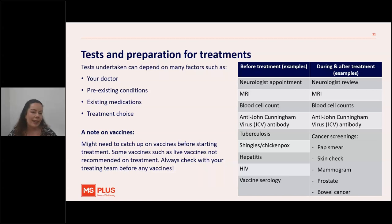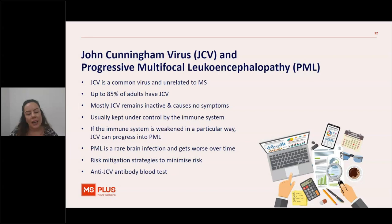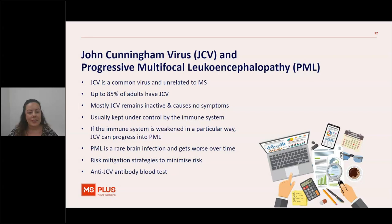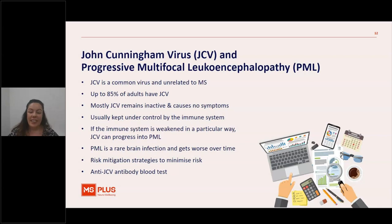Let's have a quick look at the JCV/PML situation, because it's quite unique. The JCV is the John Cunningham virus, and PML is progressive multifocal leukoencephalopathy — we call it PML for short. JCV is a common virus, completely unrelated to MS. Up to 85% of adults have JCV and don't know they've caught it, as it doesn't make you sick. It's mostly kept under control by the immune system, but if the immune system is weakened in a particular way, JCV can reactivate and progress into PML — a rare brain infection that gets worse over time.